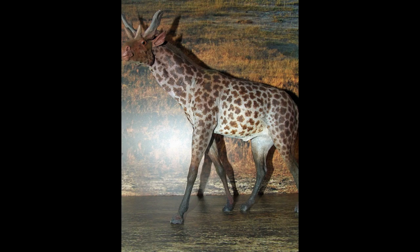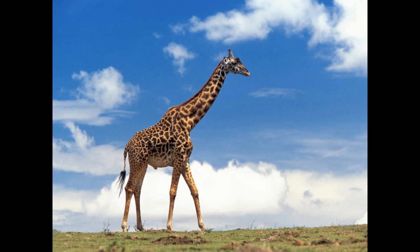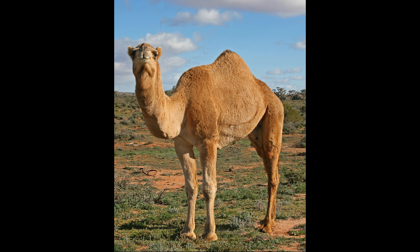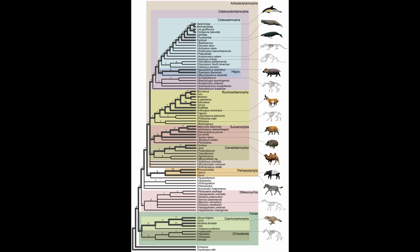Your brain knows what this is a missing link for. Ever since we were small children, we've learned to identify the giraffe. The giraffe is an even-toed ungulate, along with pigs, camels, antelope, sheep, goats and cattle.